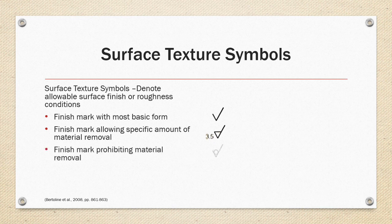A finish mark that includes a circle tangent to the V-shape on the symbol as shown on the right prohibits any material removal.